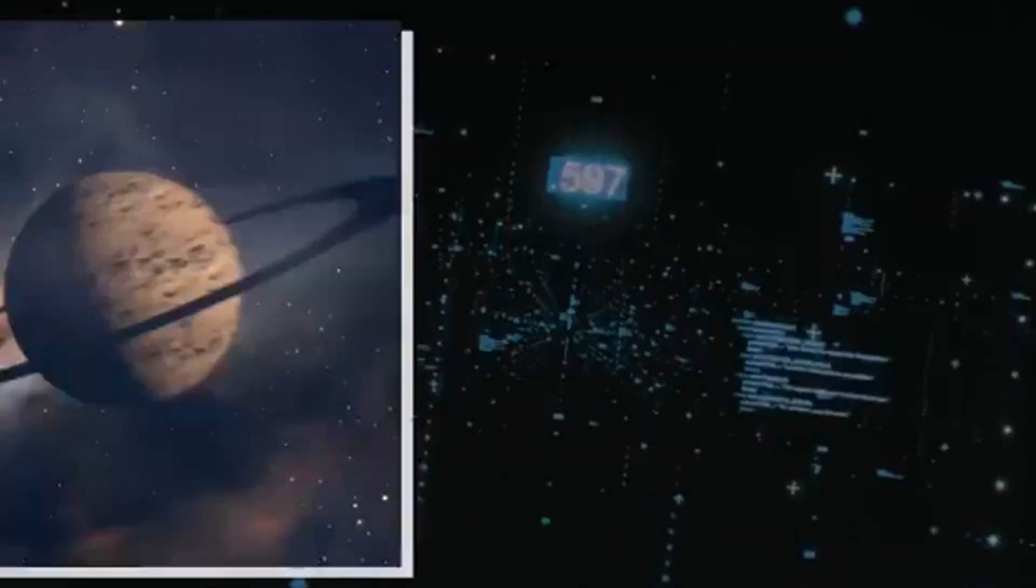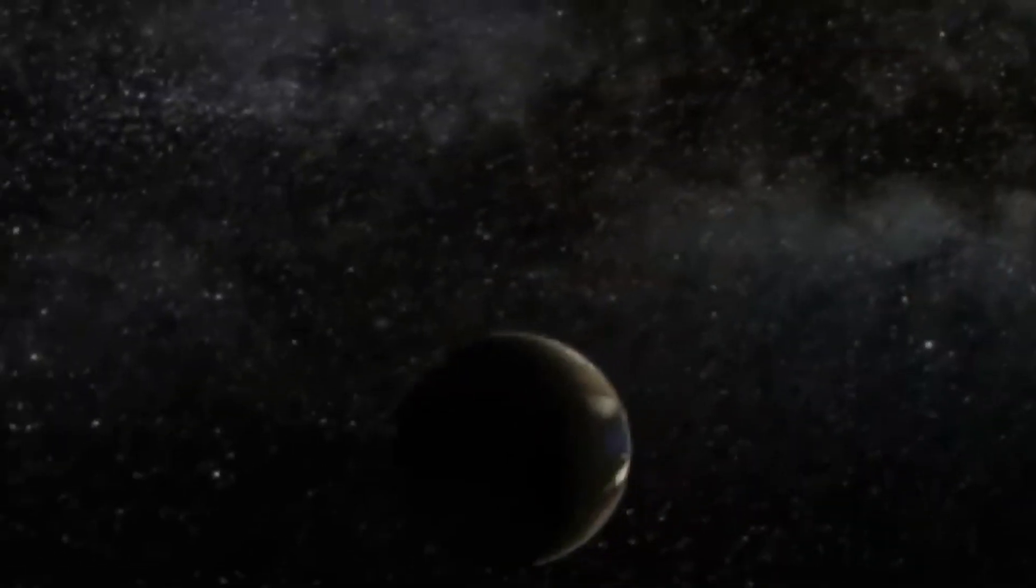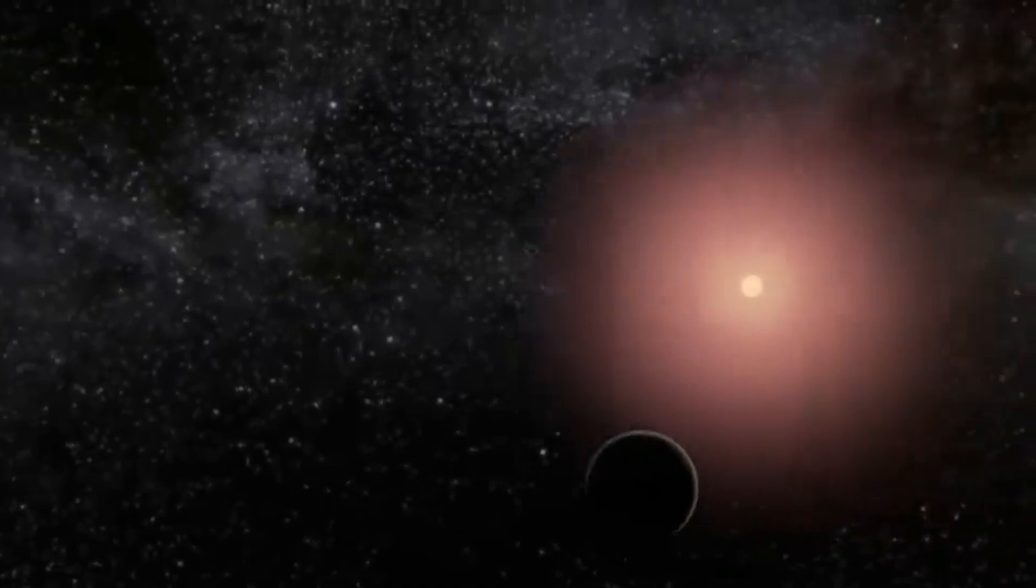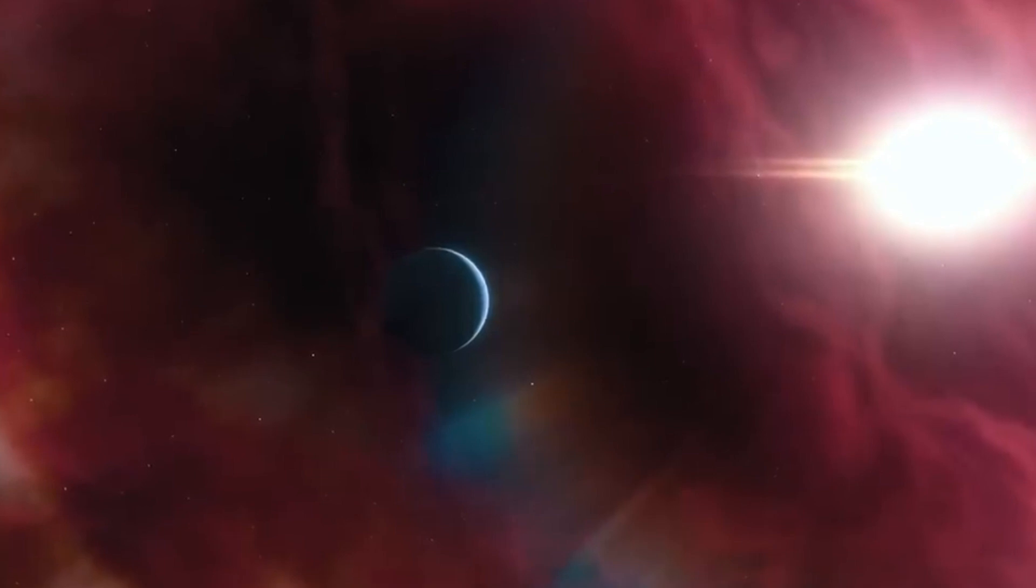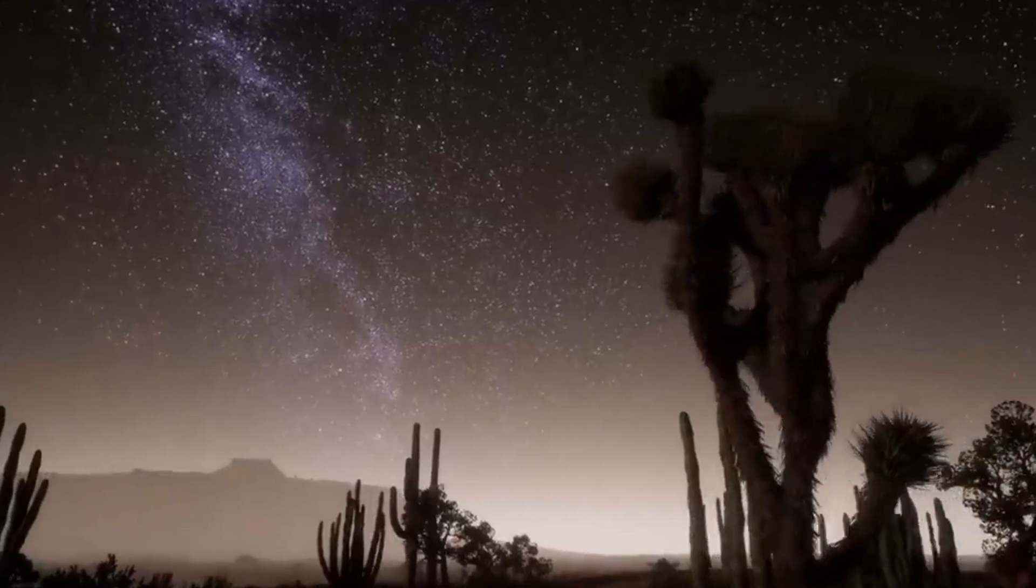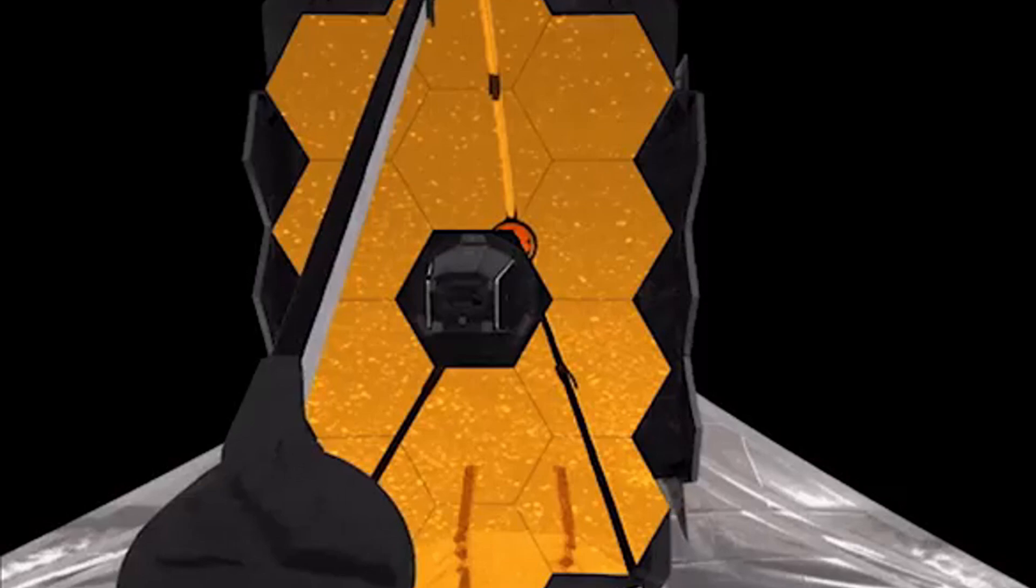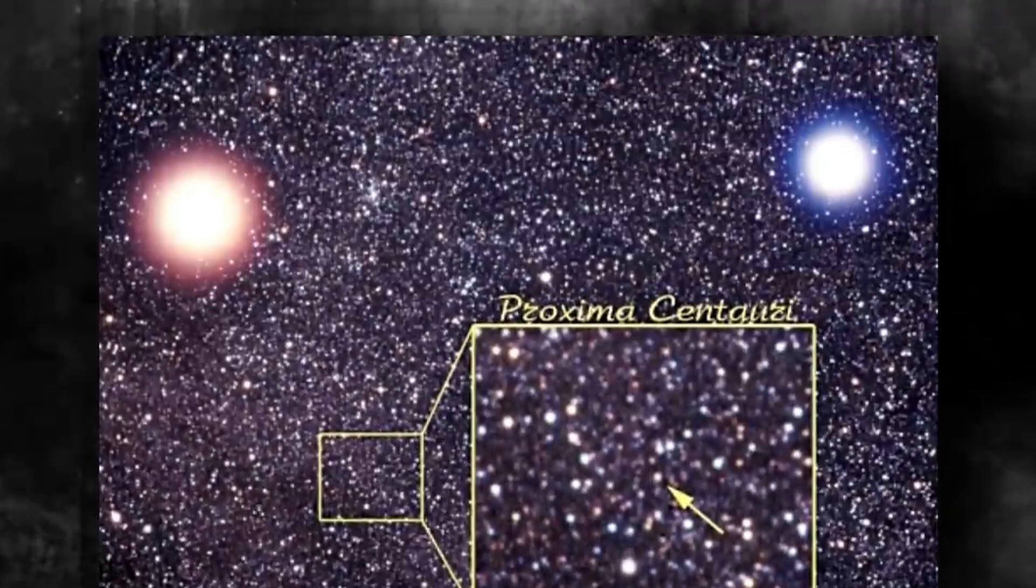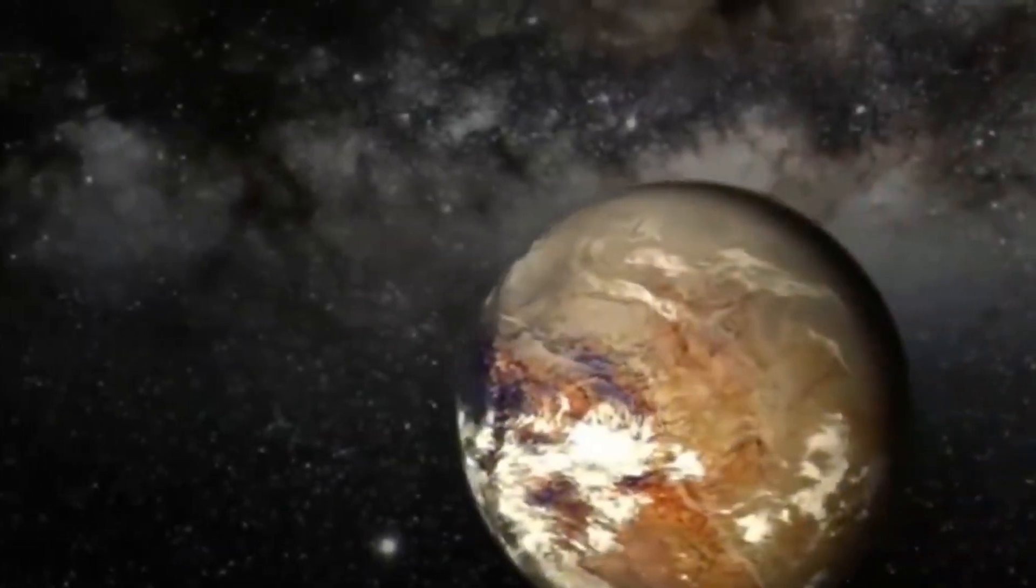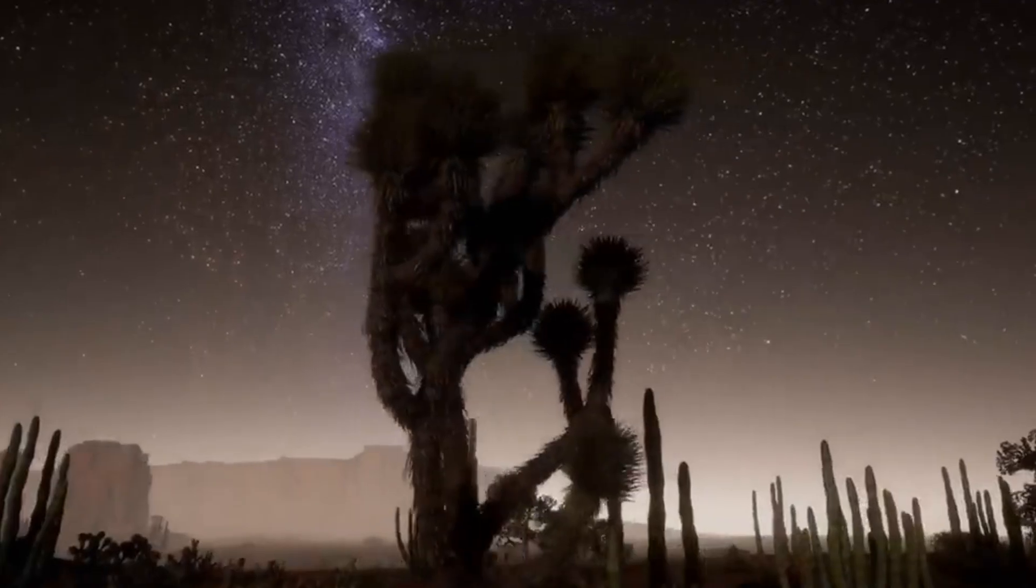Of course, the proximity of Proxima b to its parent star, Proxima Centauri, poses significant challenges for potential life on this exoplanet. Naturally, the planet is subjected to intense radiation from its star. The radiation bombardment can potentially alter its chemical composition and impact any potential biosphere. Understanding the extent of these effects requires intricate models that consider the interplay of radiation and the planetary environment. While the planet might possess an atmosphere capable of sustaining liquid water, the proximity to its star might result in extreme weather patterns, including fierce solar winds and potential atmospheric stripping due to the star's activity. These conditions might lead to an environment drastically different from Earth's, making it challenging for life to thrive.